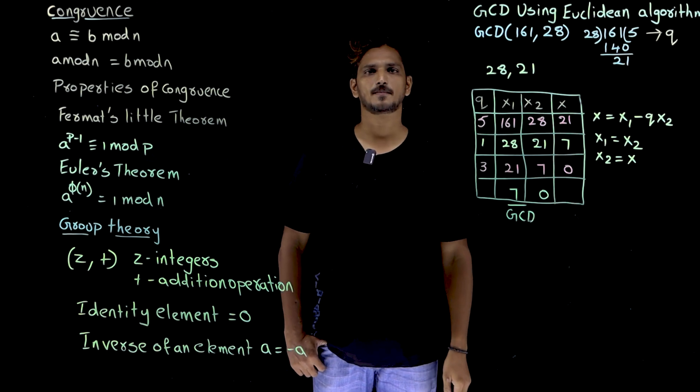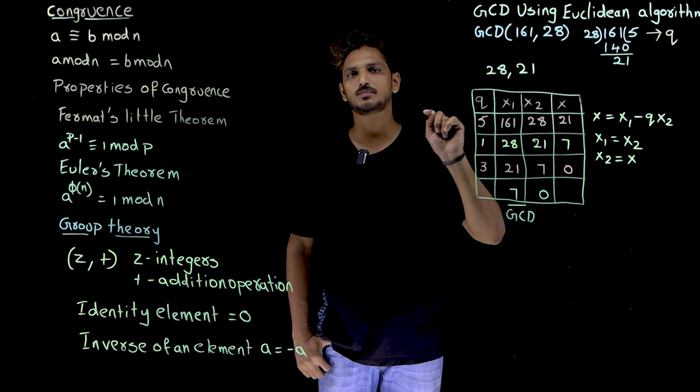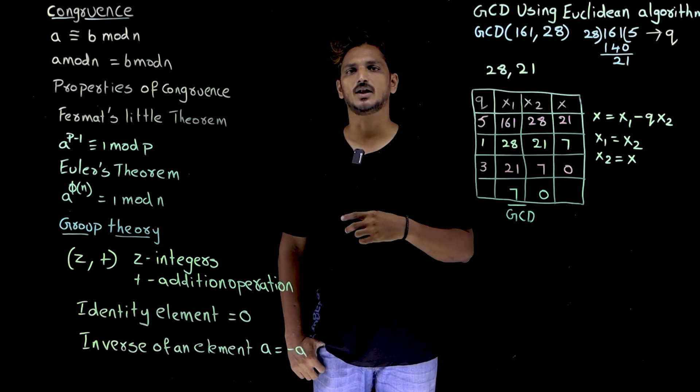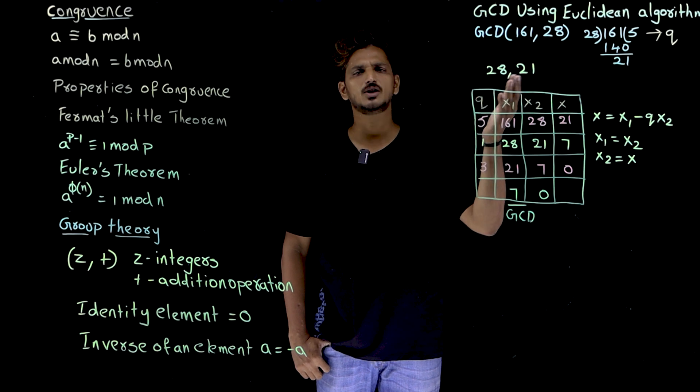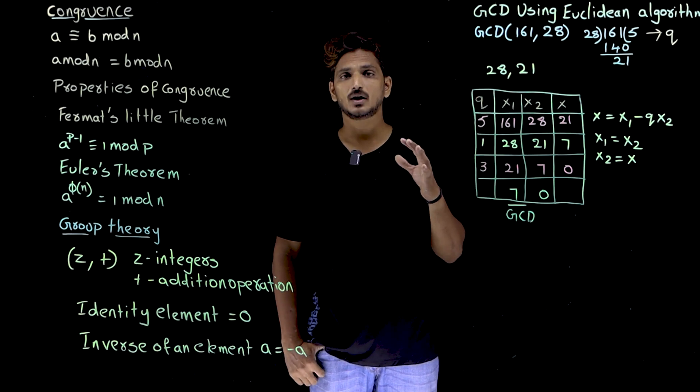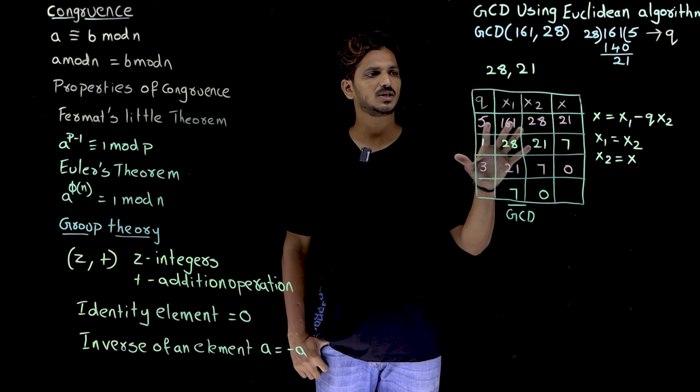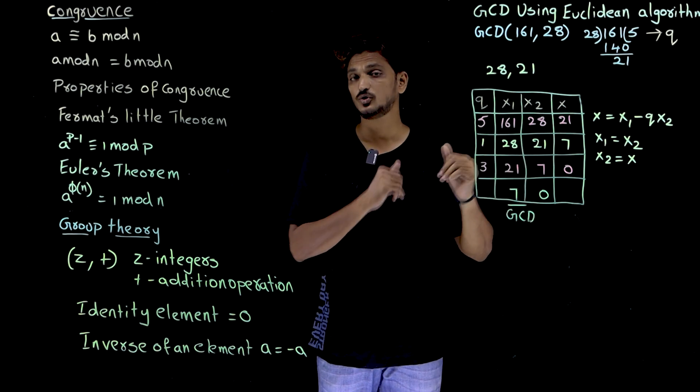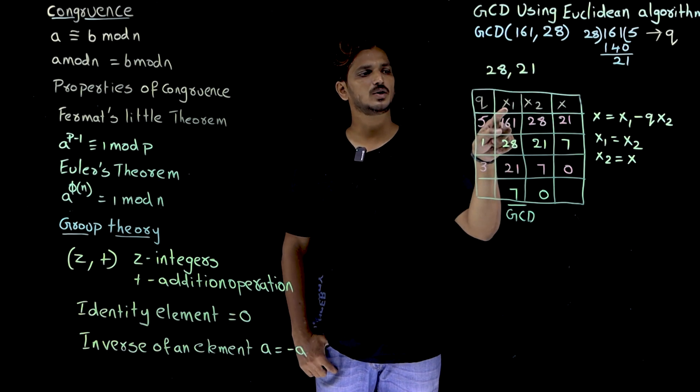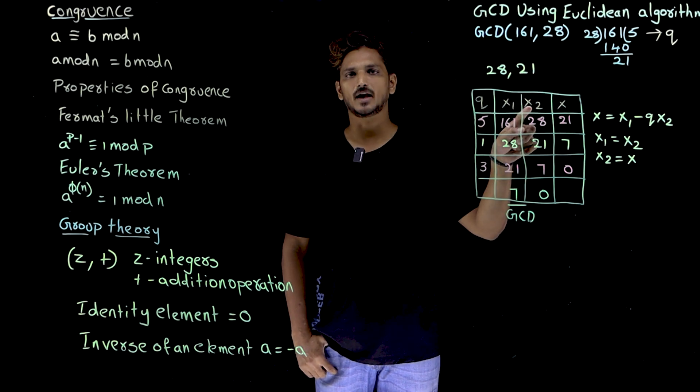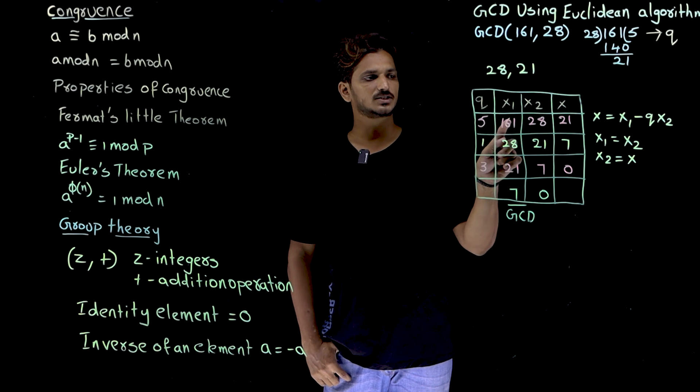So quotient 5, we call it as Q. Now take the previous smallest number, means 28 and the remainder value 21. Which one is the biggest? 28 is biggest, 21 is the smallest. Again, do the division. Like that you keep on continuing until you get the x2 value 0. Here x2 means until you get the remainder value 0. That is the process we have used in finding the GCD value using the Euclidean algorithm. The same thing we have mentioned in the table form because in our coming classes we are going to use this table form. See, let us try to understand, we have put them in an equation form. So 161, the biggest number we take it as x1.